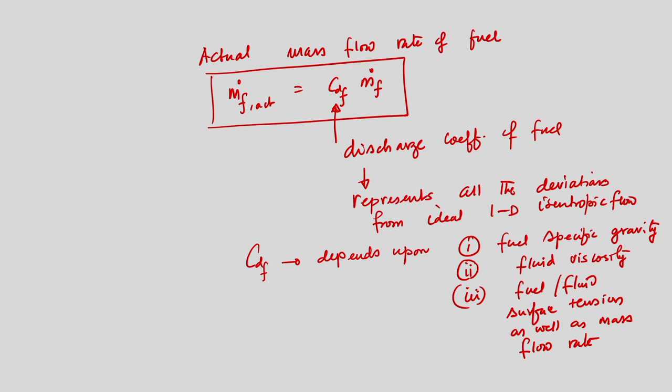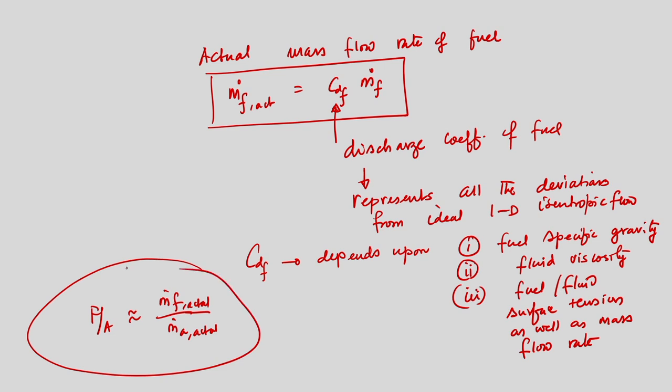If we are interested in calculating the fuel-air ratio, that is the actual mass flow rate of fuel divided by the actual mass flow rate of air, which we have calculated from this simple mathematical analysis. By suitably designing the venturi, we can predict the mass flow rate of fuel and air and determine whether the calculated actual fuel-air ratio meets the demand of the engine during normal operation, to decide whether design modifications are needed.